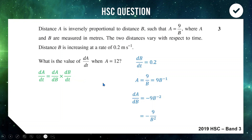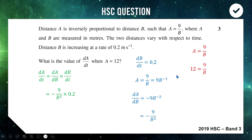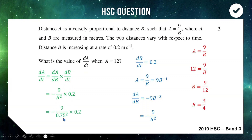So dA/dt = (−9/b²) × 0.2. We need the value of b when a = 12. Using a = 9/b with a = 12: 12 = 9/b, so b = 9/12 = 3/4. Substituting b = 3/4 into our derivative expression and calculating gives dA/dt = −3.2 metres per second. If you got −3.2, you earned 3 marks out of 70 in the exam — well done.